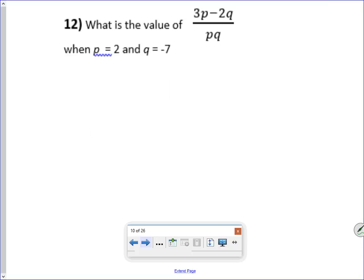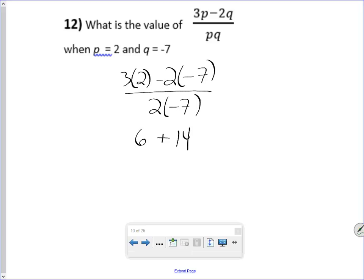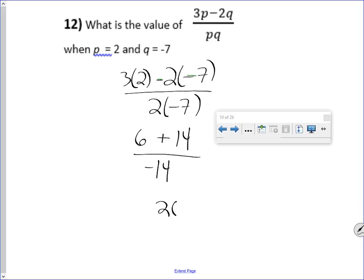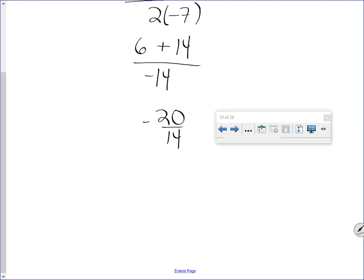So, all right, so now we're getting into the evaluation problems. What is the value of this? So we're going to substitute in. So this is going to be 3 times 2 minus 2 times negative 7 over 2 times negative 7, which is 6 plus 14, because a negative times a negative is a positive, over negative 14, which is 20, negative 20 over 14, which, if we reduce the fraction, is negative 10 over 7.